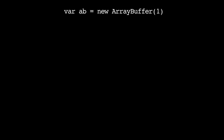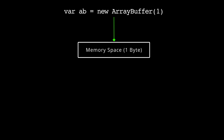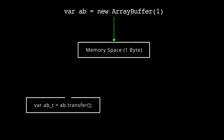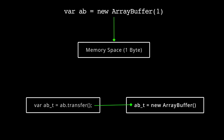When you created a new ArrayBuffer instance ab, it pointed to a newly created memory space of one byte length. When you call ab.transfer, a new ArrayBuffer ab_t is created, and the memory space of one byte now belongs to this newly created ArrayBuffer. The connection between ab and the memory space is lost — ab can no longer access the memory space that was created during its own initialization.